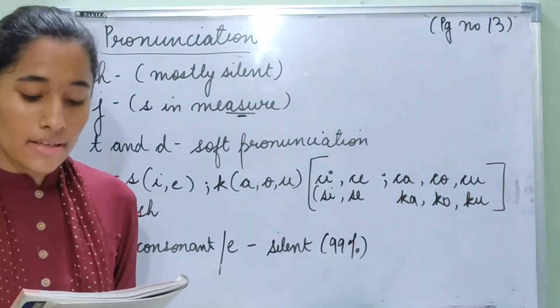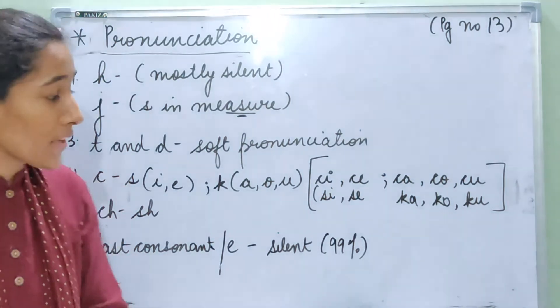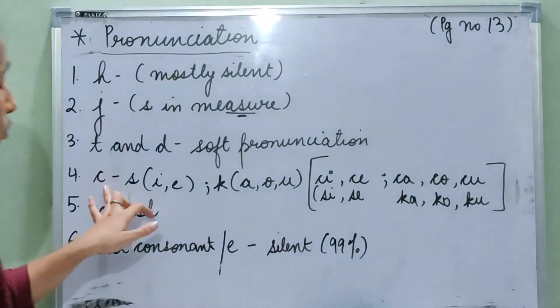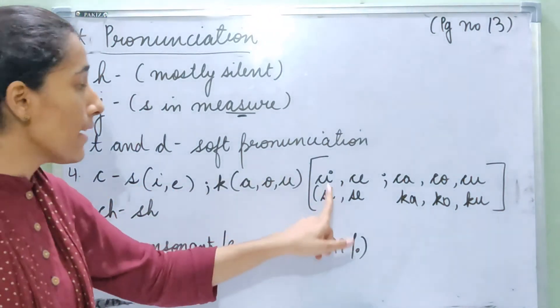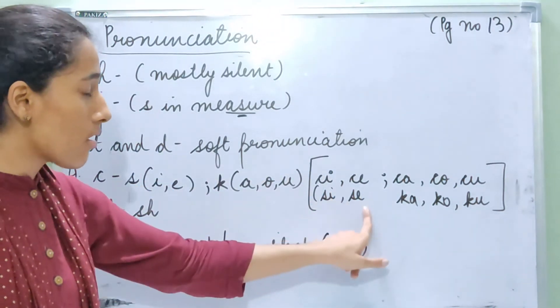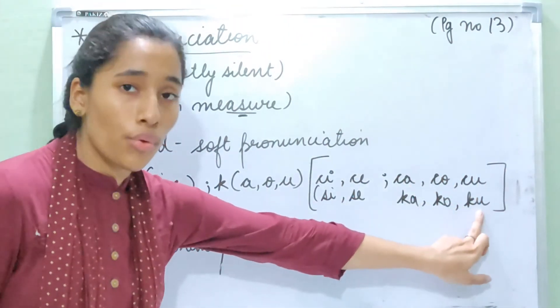Letter C is followed by letters I and E sounds like S, but elsewhere sounds like K. So if we put letter C with I and E they sound like C and S. But if we pair them with A or U they sound like car, toe, Q.